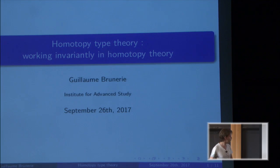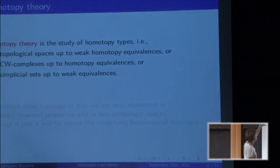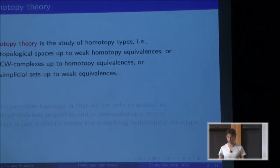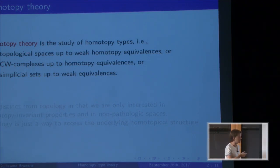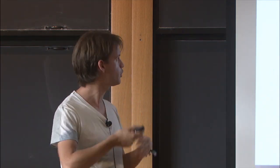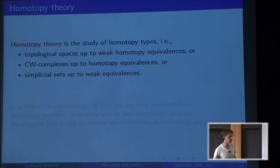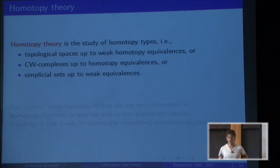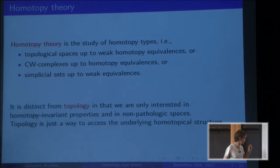First, a rough definition: homotopy theory is the study of homotopy types. By homotopy type, we usually mean a topological space up to weak homotopy equivalence — we're not interested in topological spaces up to homeomorphism, but up to homotopy equivalence. We can also talk about CW complexes or simplicial sets up to homotopy equivalences.